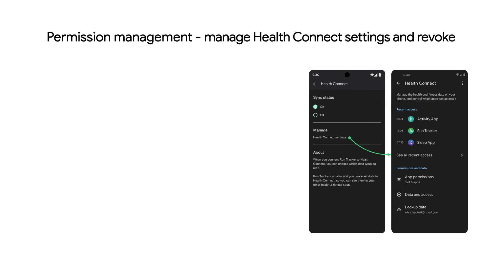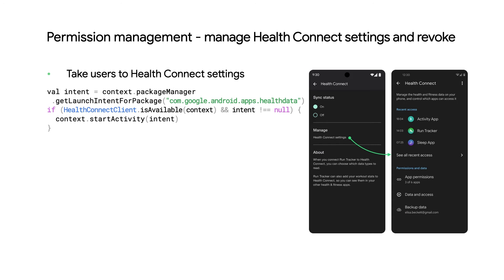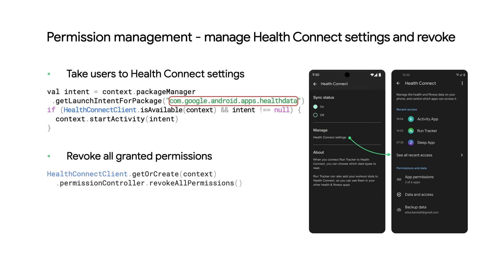As one of the core values of HealthConnect is centrally managed permissions, users will need to modify any permissions settings from within the HealthConnect app rather than in your app's settings page. From user research, we've learned that users will expect your app's settings to link out to HealthConnect settings. Here's some code that shows you how to launch the HealthConnect app via an intent from your app. Additionally, if you'd like to provide an affordance for users to revoke all granted HealthConnect permissions, that is straightforward to do with the following code.